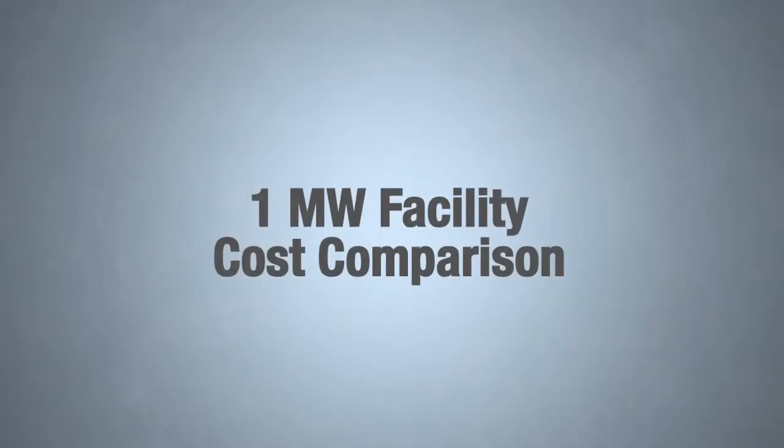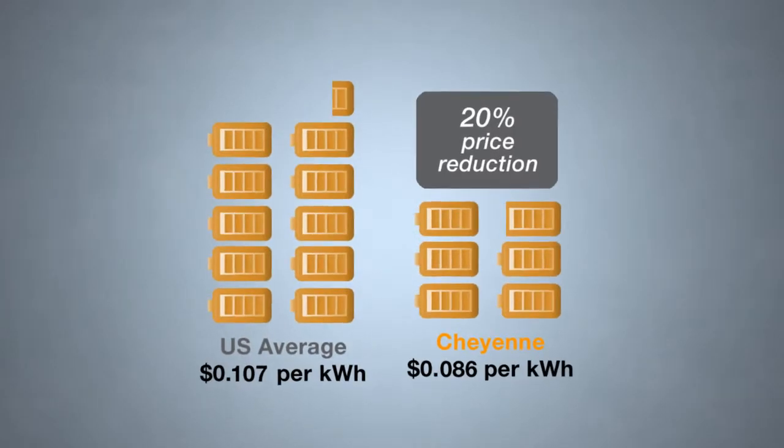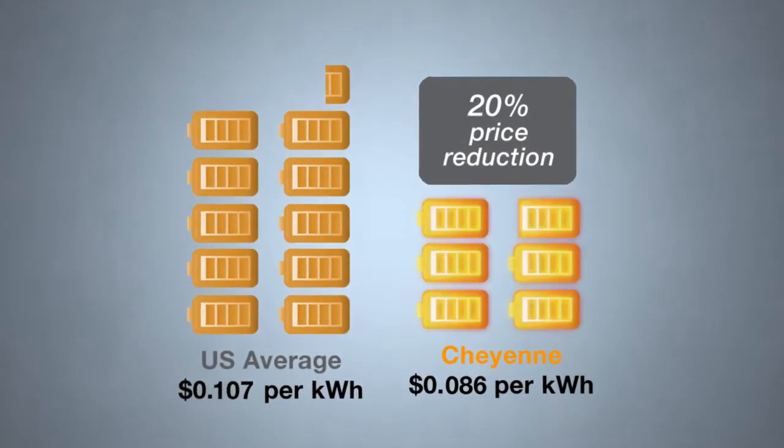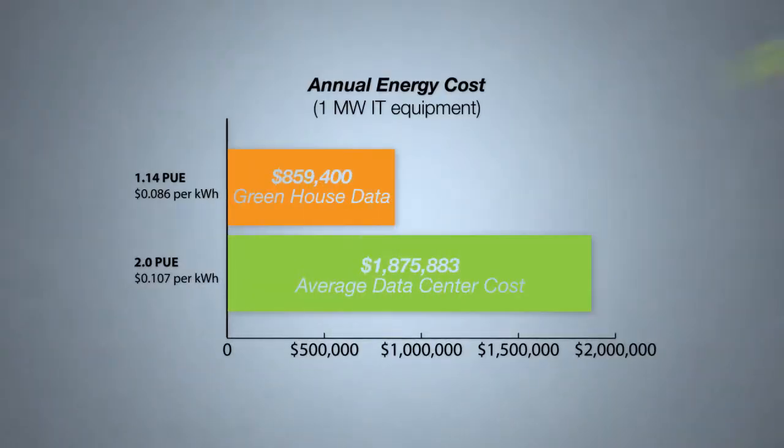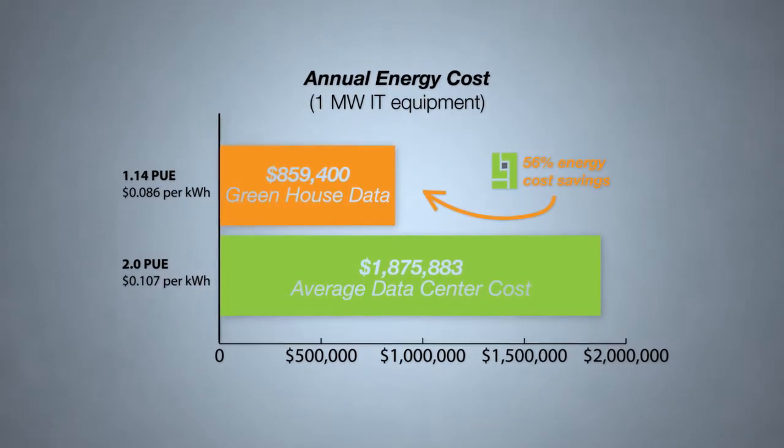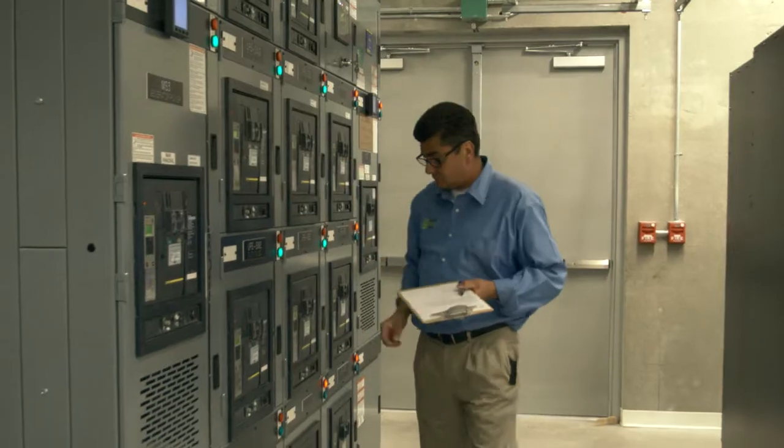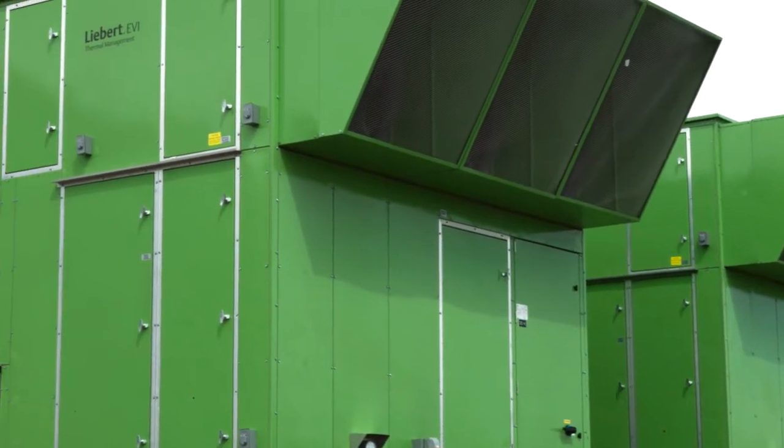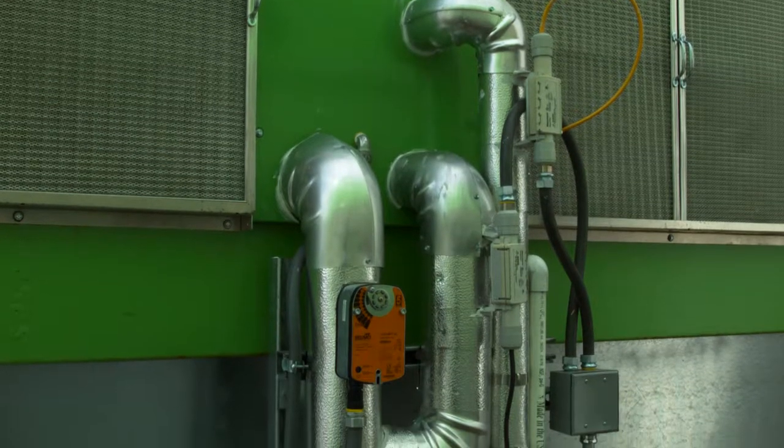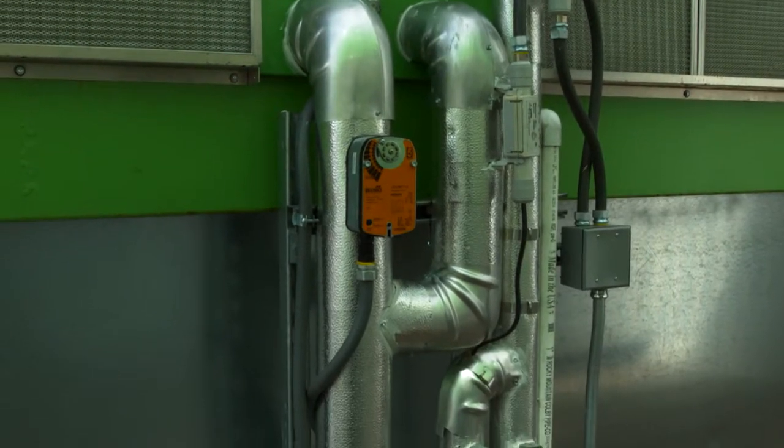The target PUE for our new data center is about 1.14. We are trying to get that PUE down as much as possible so that we can keep our environmental footprint as small as possible. We looked at recycled materials, low VOC paints, very energy efficient air handlers and cooling infrastructure, so that we could operate about 90% more energy efficient from a cooling perspective than many of our competitors.